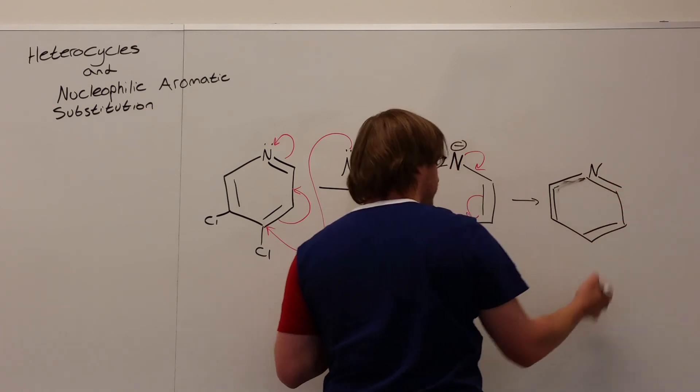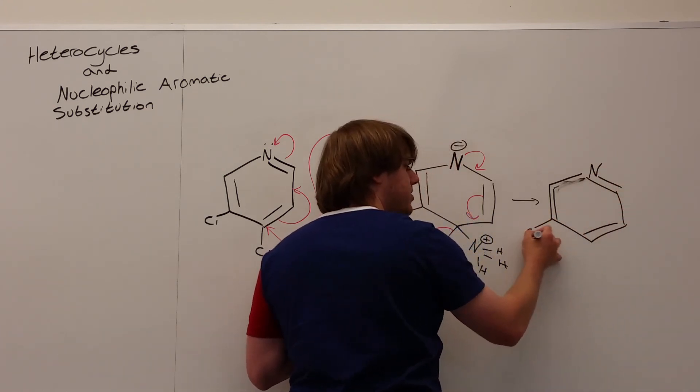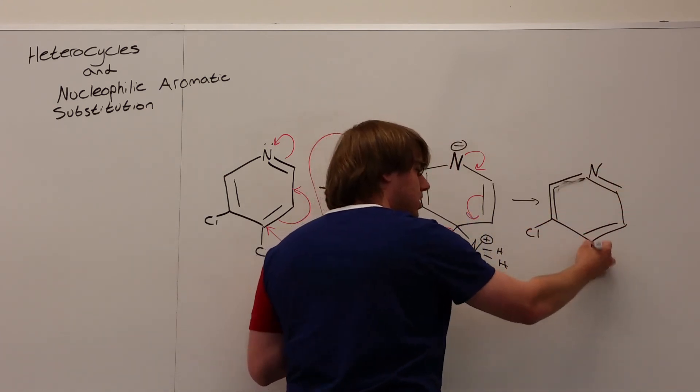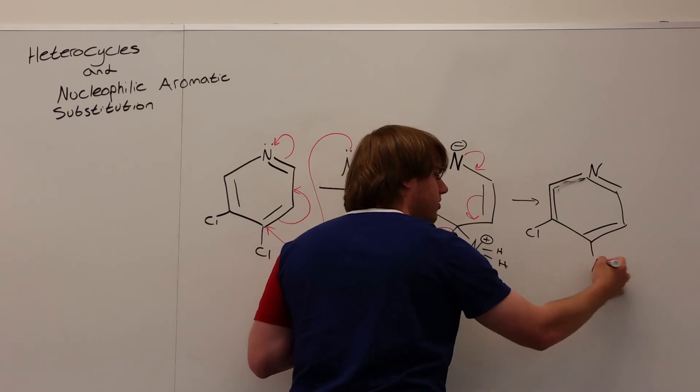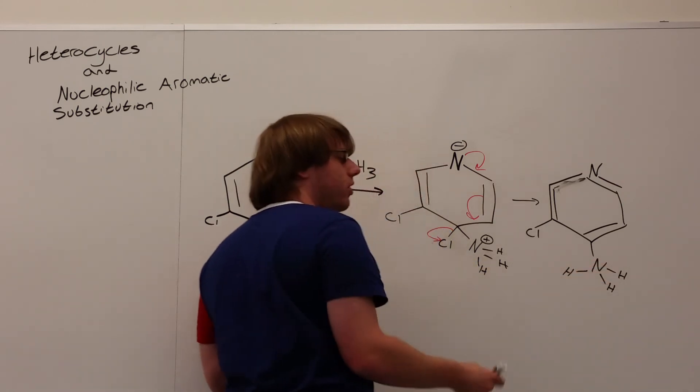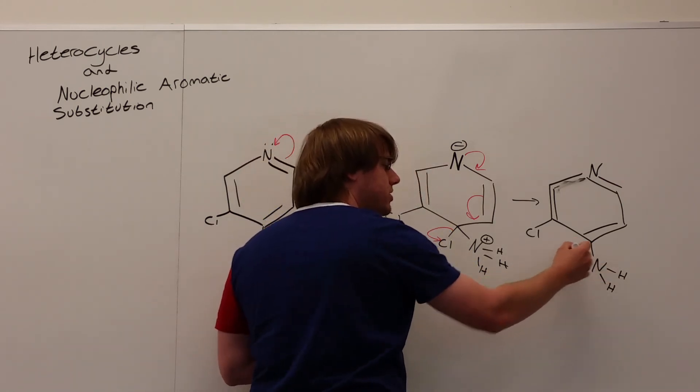Double bond there, double bond here, and double bond here. The chlorine in the meta position is untouched and unchanged, and now we have NH3 positive on the bottom attached in place of the para chlorine.